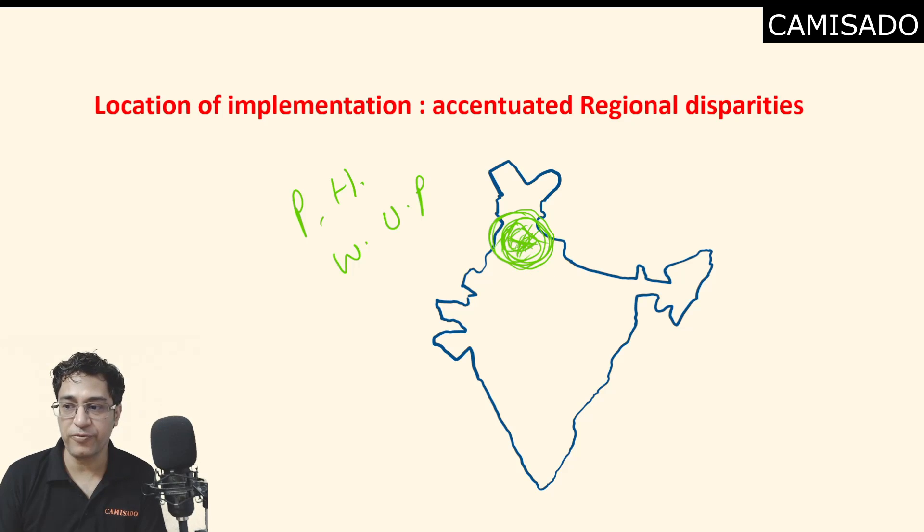That is why this region was ready for the implementation of green revolution and the farm size was also relatively larger. That is why this region was an appropriate region. Due to the selection of this region, we were able to tide over the problem in just five to six years.